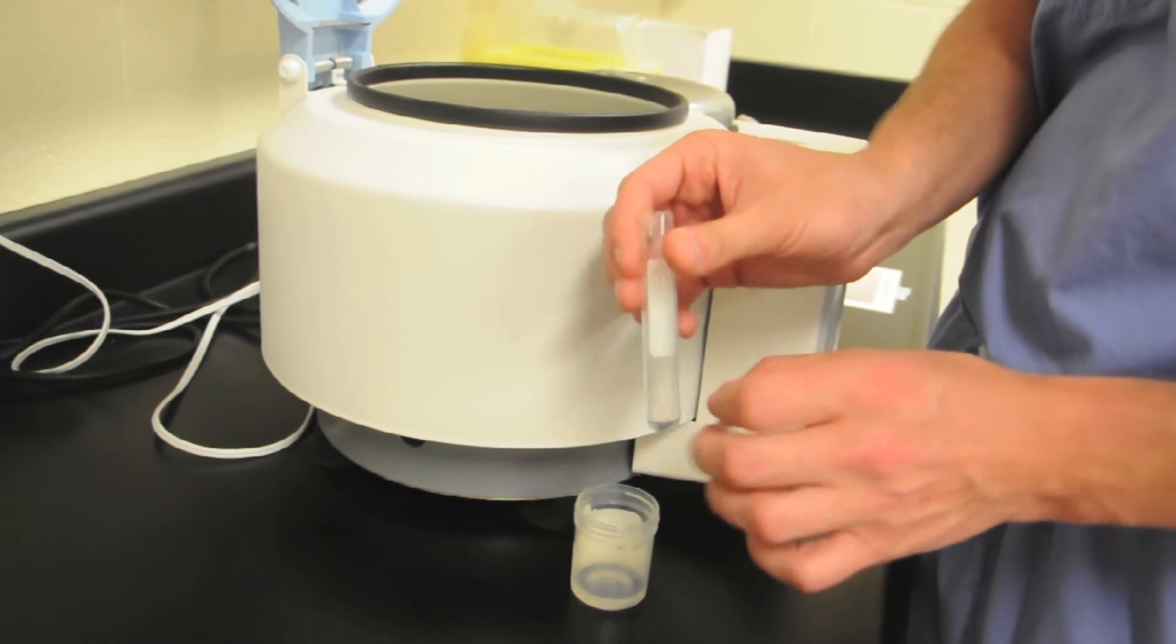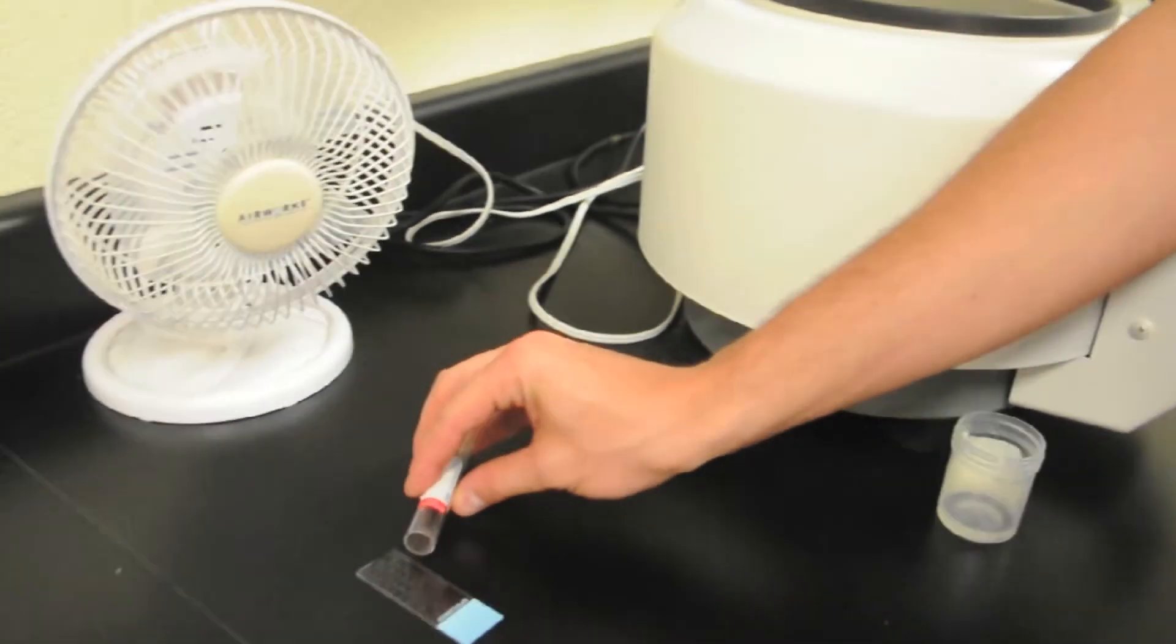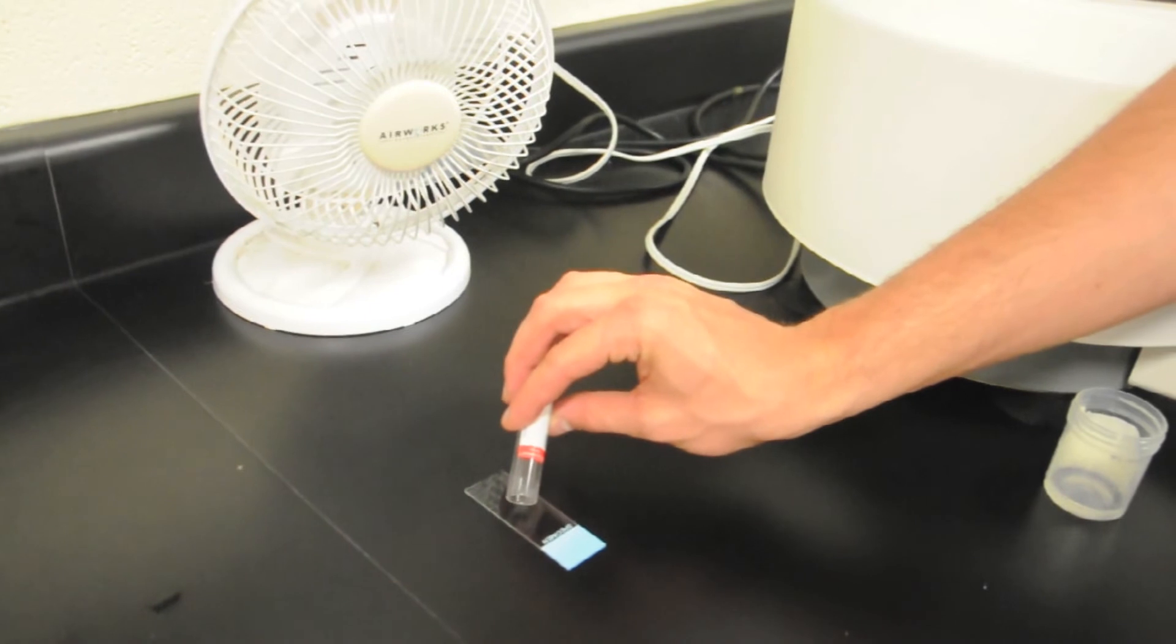Place a small drop of this concentrated cell sample onto a clean glass slide. Spread the sample around by tipping it in several directions.